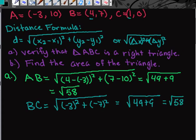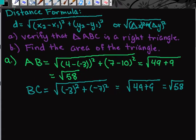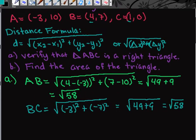For the last side, we would use A to C or C to A. It doesn't matter which one you use. From negative 3 to 1, I moved 4 places. From 10 to 0, I moved 10 places.